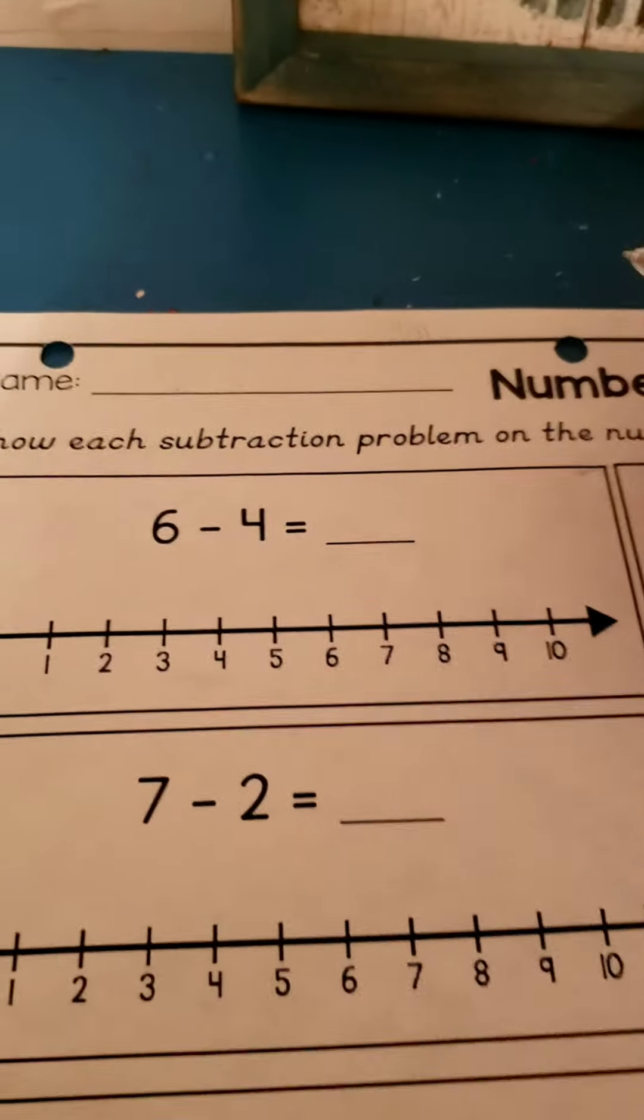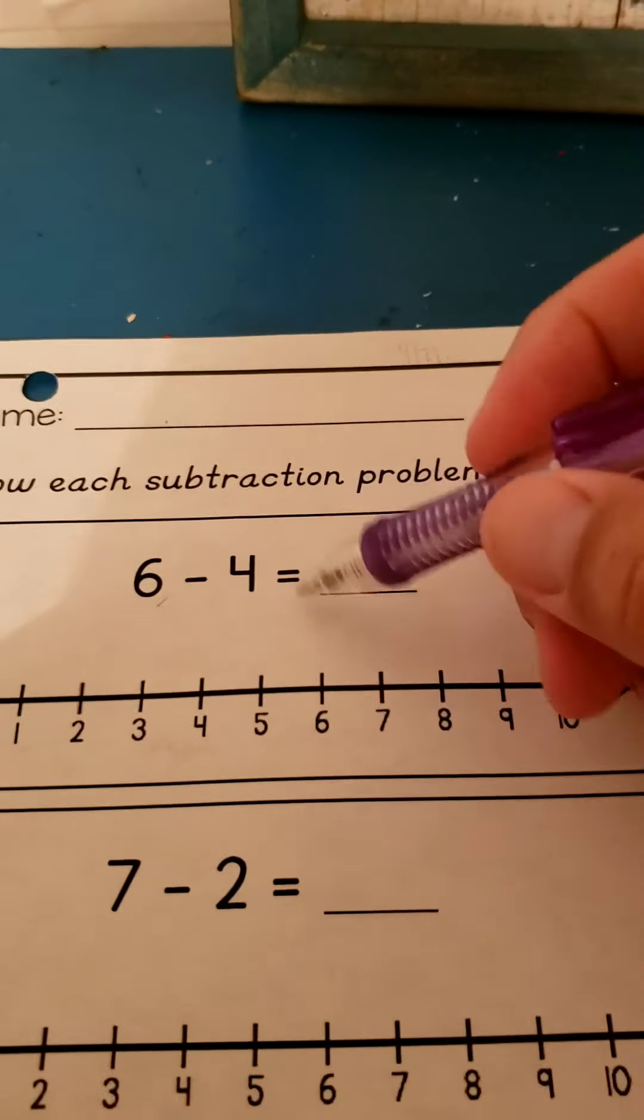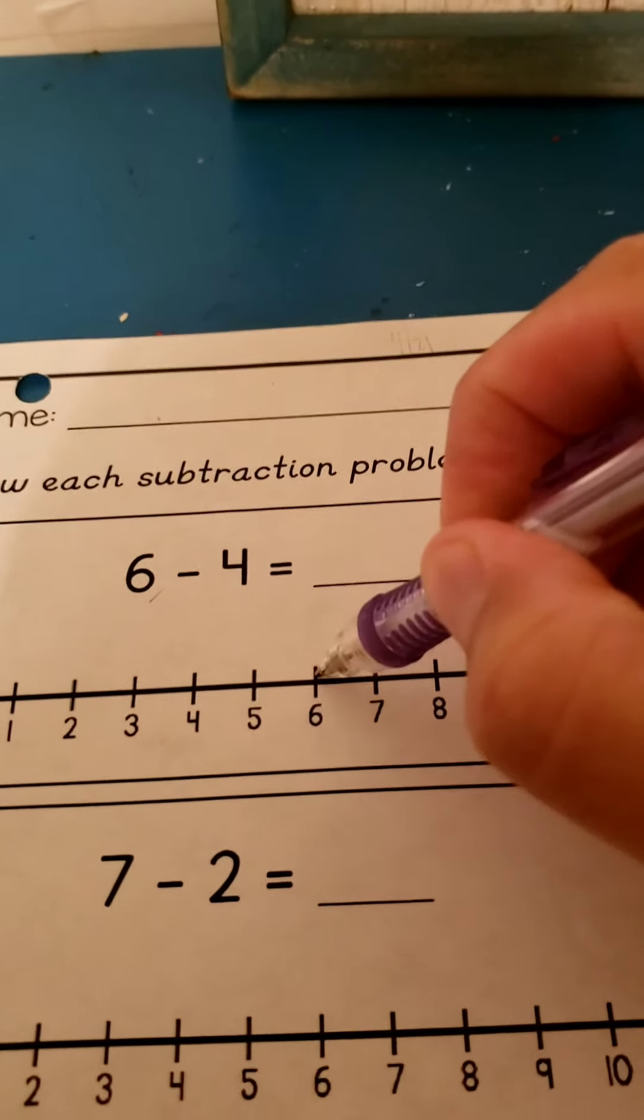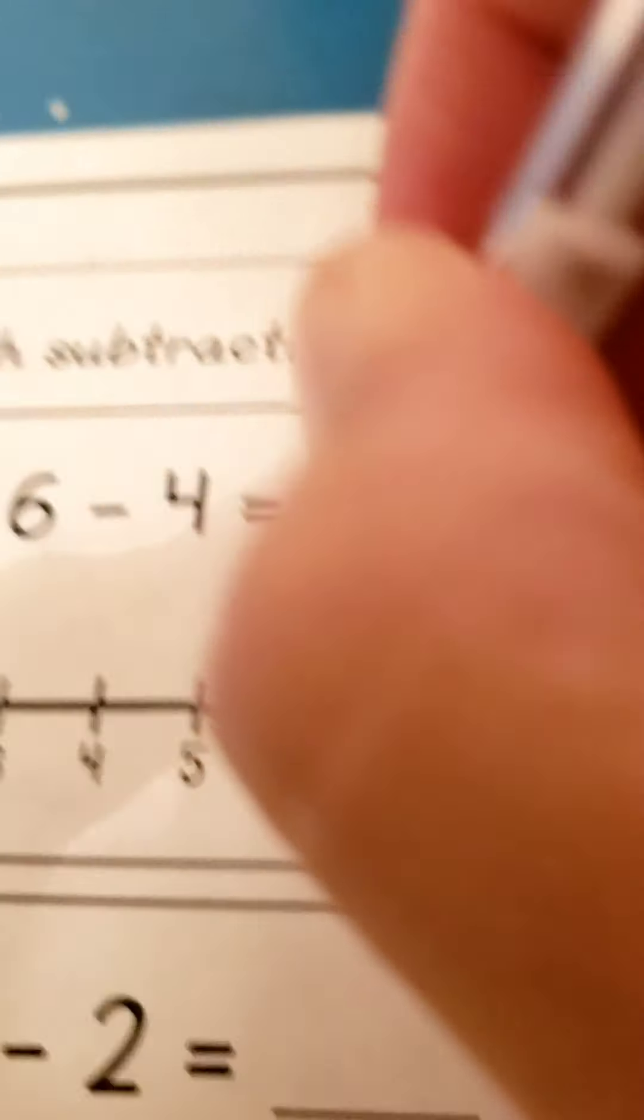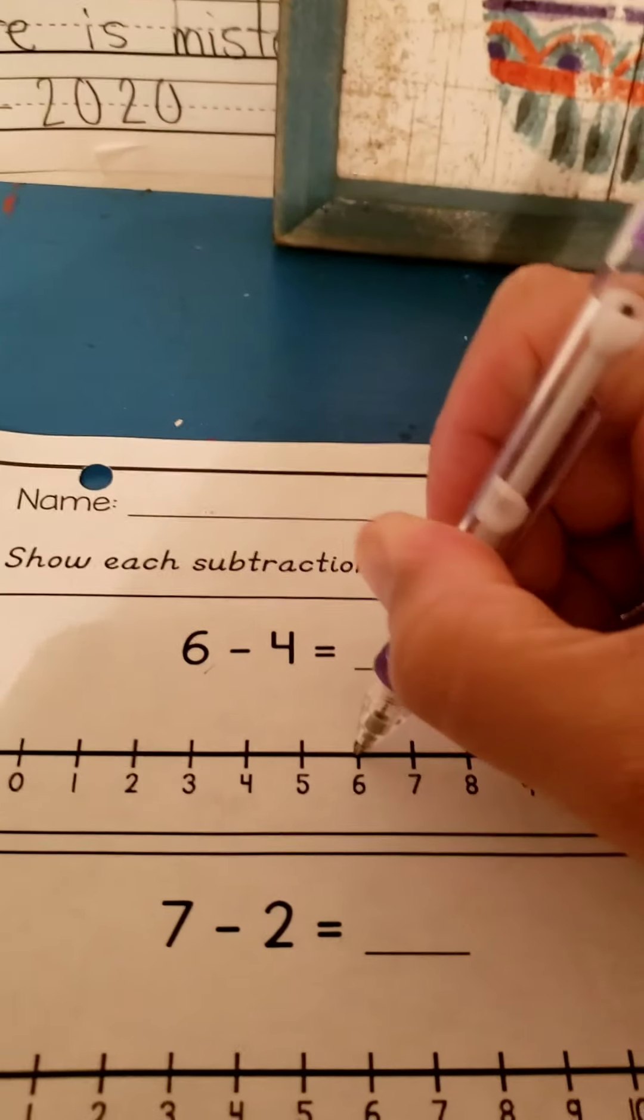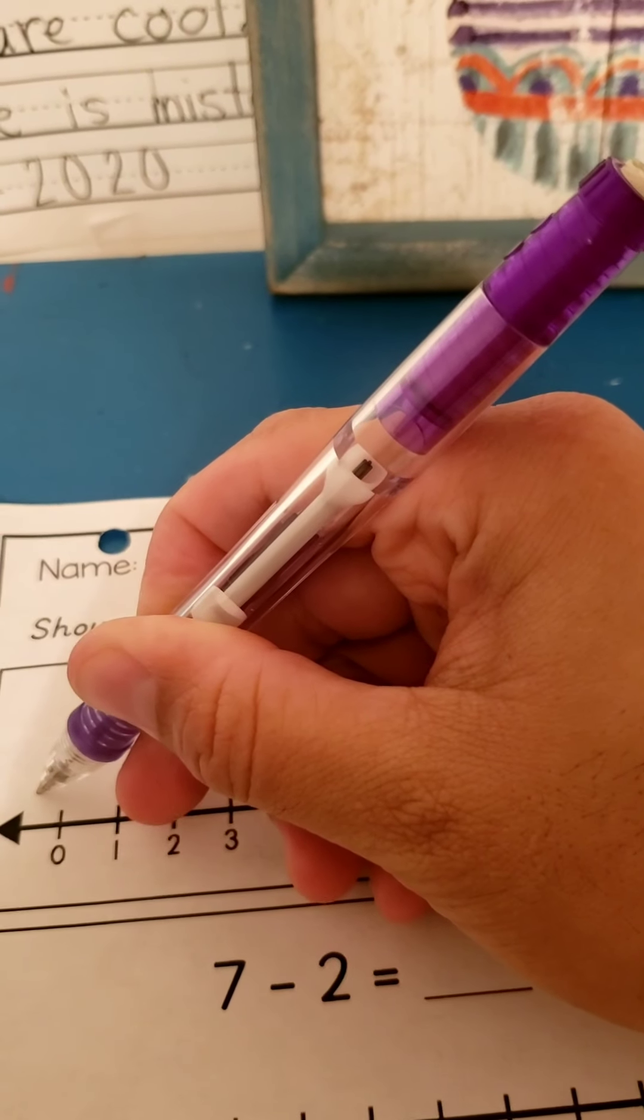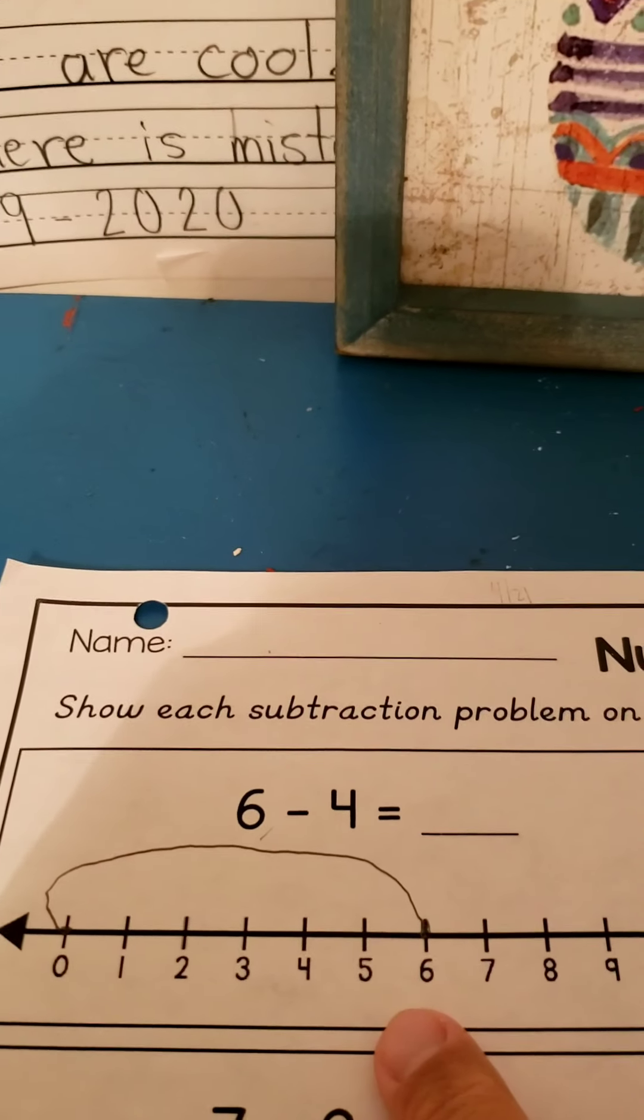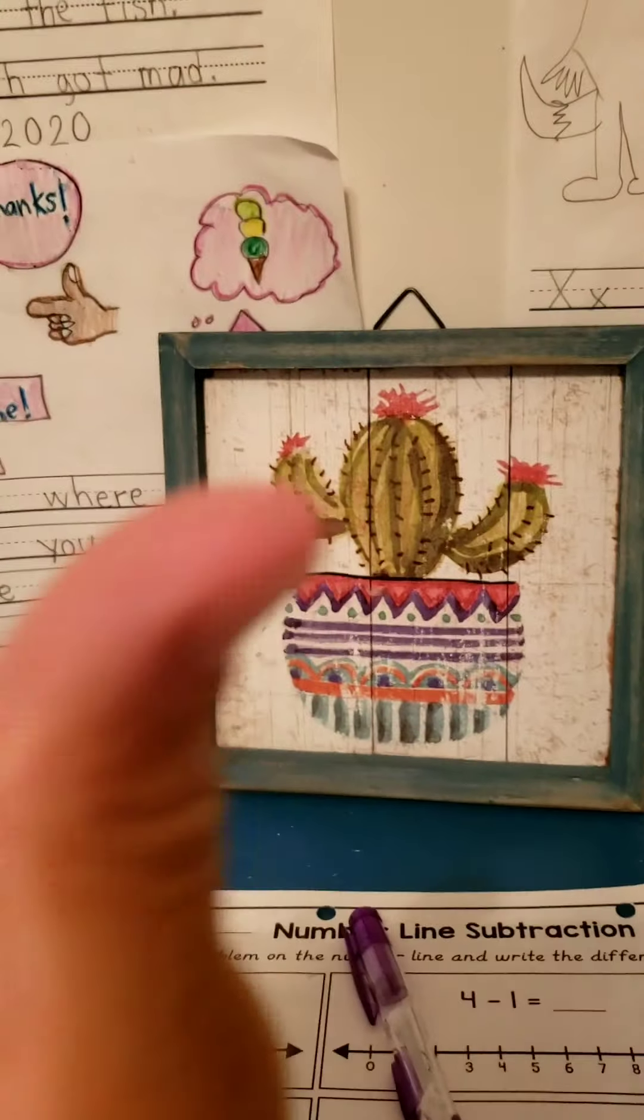When you are using a number line for subtraction, you have to look at this number right here. Find that number on number line. Right here. Now, what you're gonna do is make a little dot here because that's where you're gonna start. And it's subtraction so you have to go all the way to zero. That means you're gonna show me that you're subtracting by going all the way to zero. This shows me that you're gonna subtract. Because when you're subtracting, you're going that way.